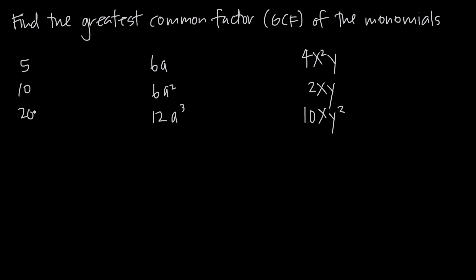So what we want to do to find the greatest common factor at its most basic level — and we'll get faster at doing this as we get more practice — is break down each of our numbers into their prime factors. Then we'll take all of the factors that these numbers have in common and multiply them together to find the greatest common factor. So here's what that looks like.